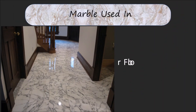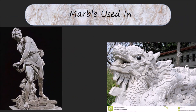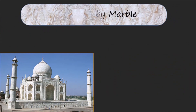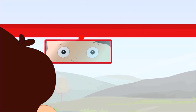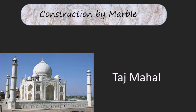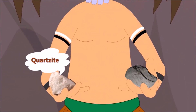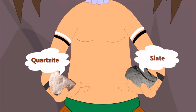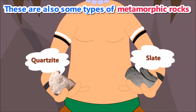Marble is used as floor tiles and to make sculptures. One of the seven wonders of the world, the Taj Mahal, is also made of marble. Quartzite and slate are other examples of metamorphic rocks.